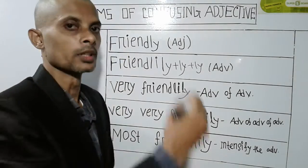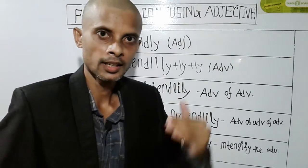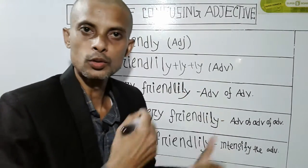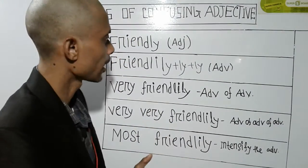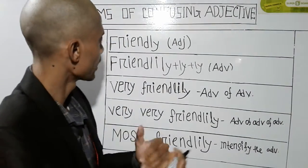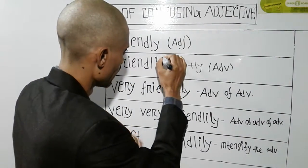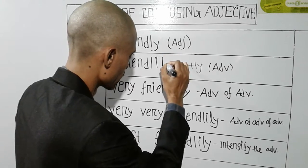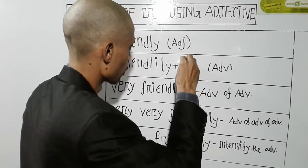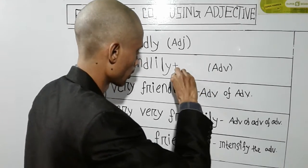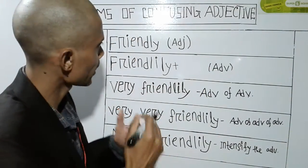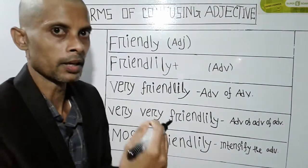If you use -ly to add -ly, you can use your teacher as a reference. The reason is that if you use -ly on top of -ly, this is not grammatically incorrect. I will teach the other way, but I have the same sentence.